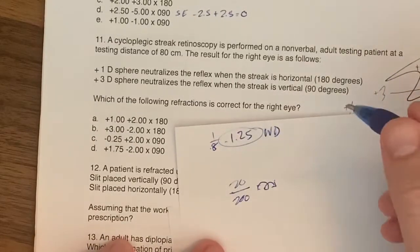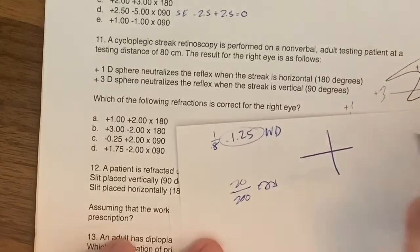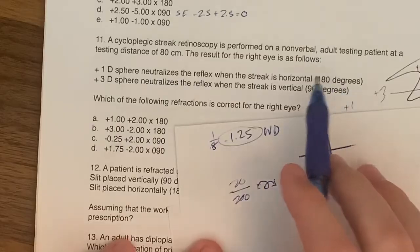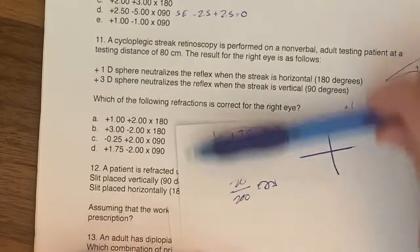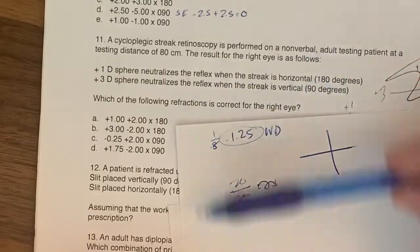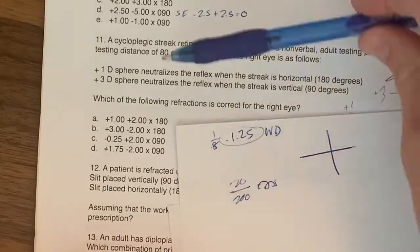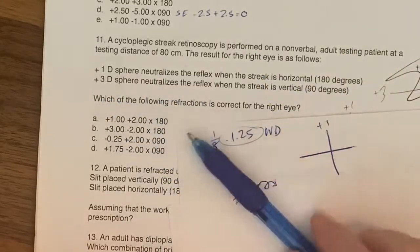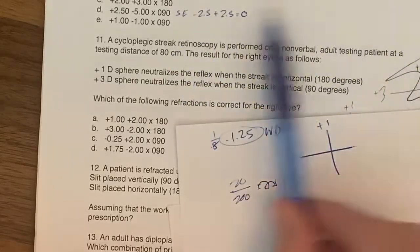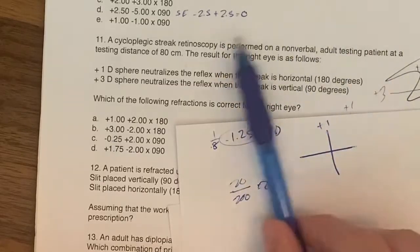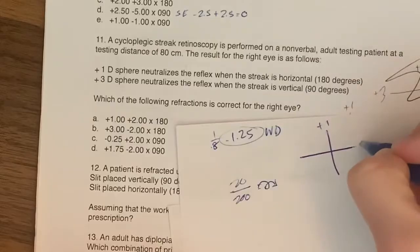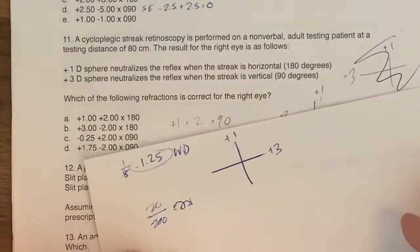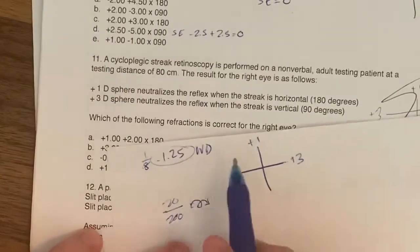This seems like it's going to be difficult, but it's actually pretty simple once you have a few concepts down. We're essentially going to first draw out a power cross, which is what you're doing when you're streaking somebody. A plus 1 neutralized the reflex when it was horizontal, so that's like this and you're moving up and down. So we're really testing the steepness or the power vertically. This will be a plus 1. This is a power cross, not the axis, it's power. And a plus 3 neutralized when the reflex is vertical. So the power here is plus 3.